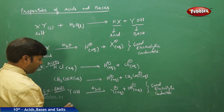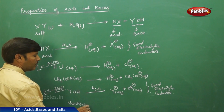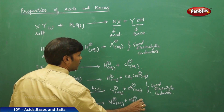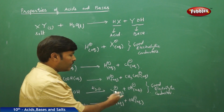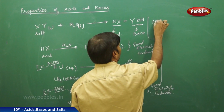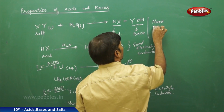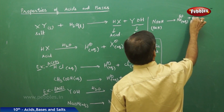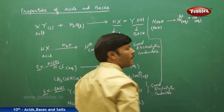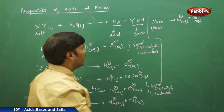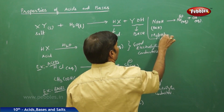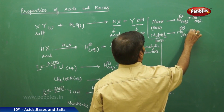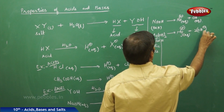Take a specific example for a base: NaOH (aqueous) dissociates to give Na+ (aqueous) plus OH- (aqueous). NaOH is a base giving Na+ and OH- ions. One more example: magnesium hydroxide is also a base. It gives away one magnesium cation carrying two units of positive charge, and two OH- ions in the aqueous state.